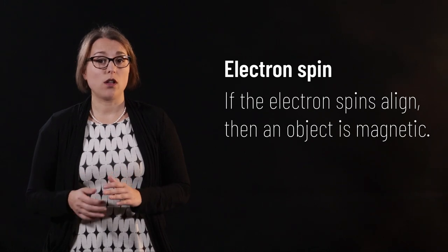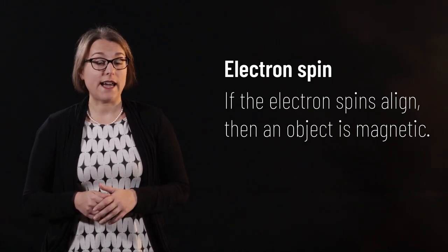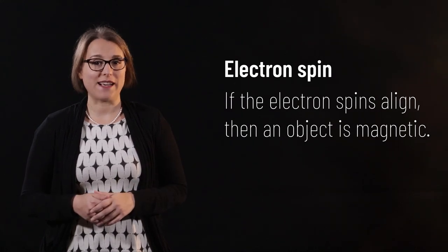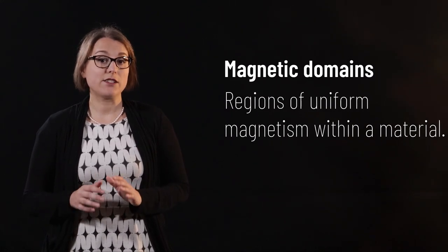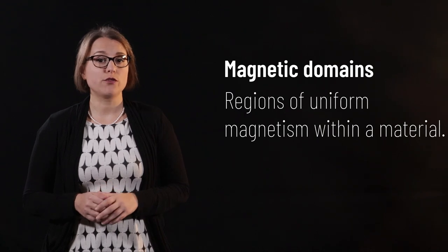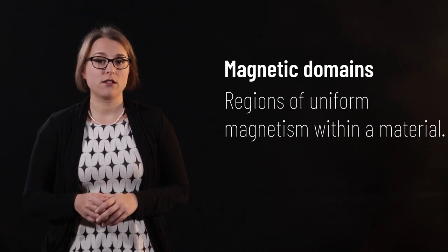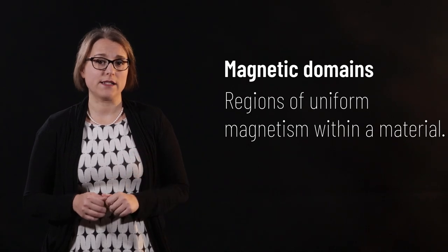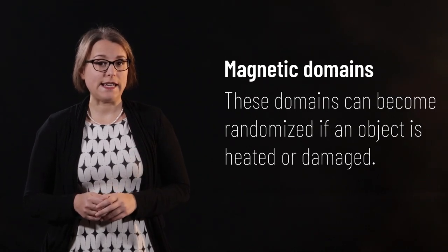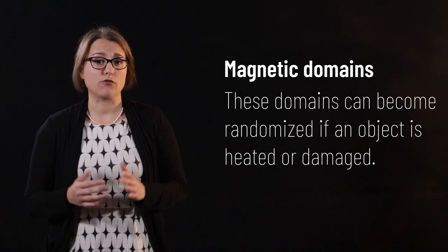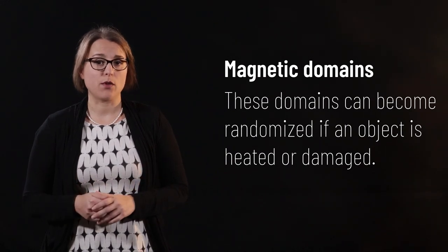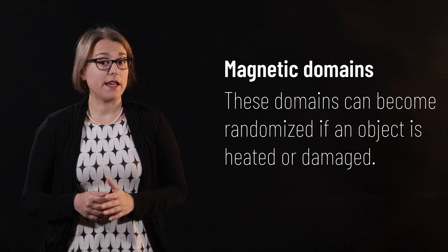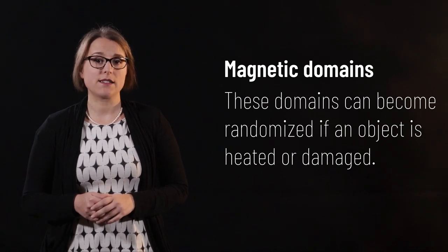When all or most of the atoms in a substance contain atoms with the same spin alignment, the effect is a permanent magnet. Magnetic domains are regions of uniform magnetism within a material. Each domain can be thought of as a tiny permanent magnet. If a magnet is heated, or damaged by getting repeatedly dropped, for example, it is possible for these domains to lose their alignment and the magnet can become demagnetized.